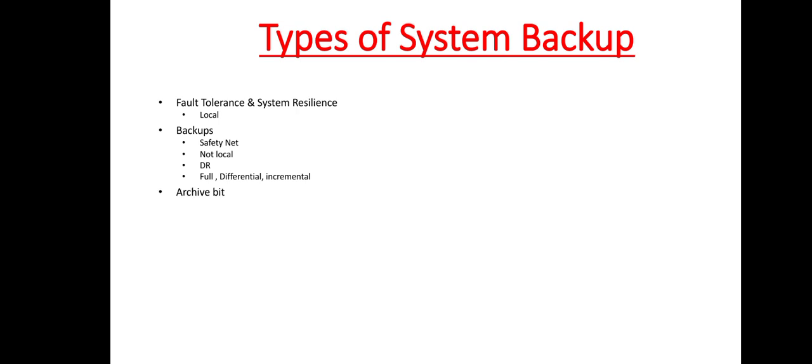Now, the archive bit is a concept with regards to backup operations. So once a file gets modified on the primary system, the archive bit of that file is set to the value of 1, which indicates that this file has been changed and it needs to be collected by the backup operation.